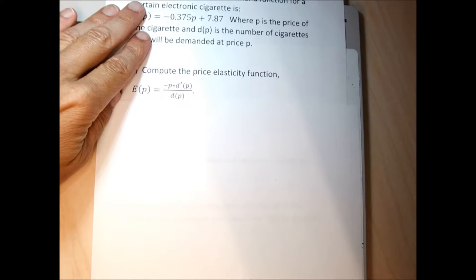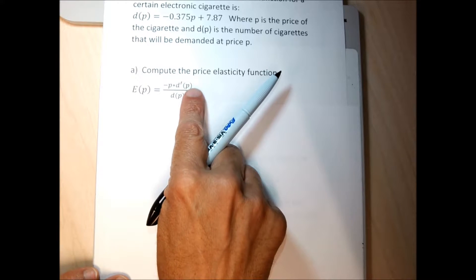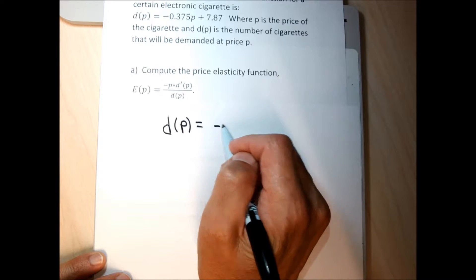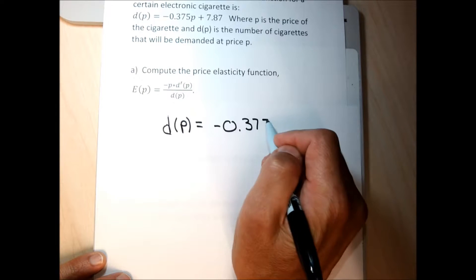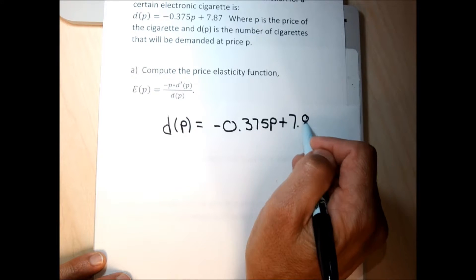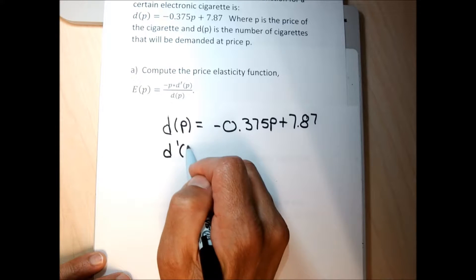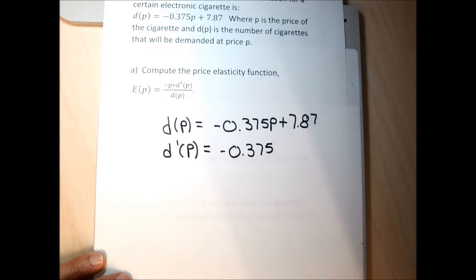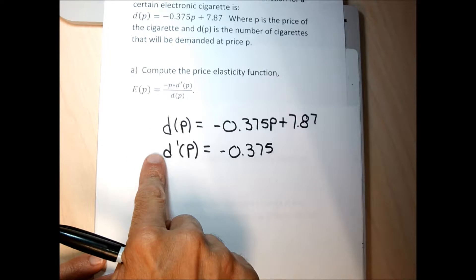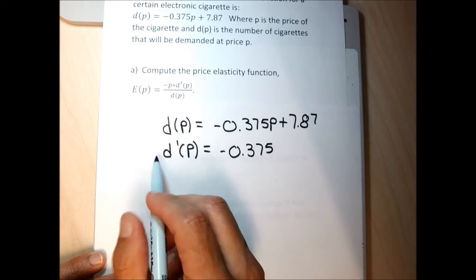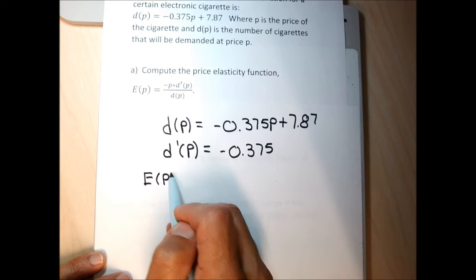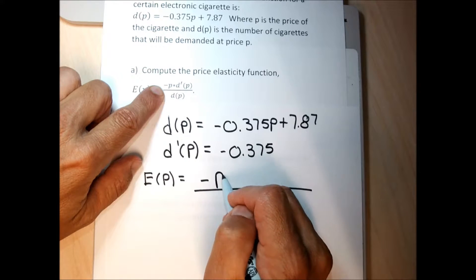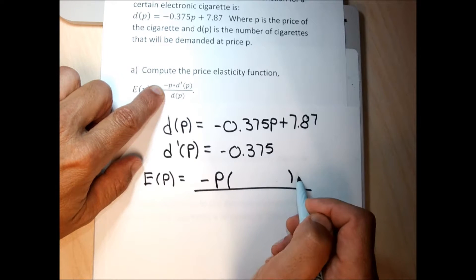Part A says compute the price elasticity function. In order to do that, I need the derivative of the price demand function. The price demand function is negative 0.375P plus 7.87. Using the general power rule, the derivative of the first piece is just negative 0.375 and the derivative of 7.87 is 0. Now I have both the price demand function and its derivative, so I can find the price elasticity function. I form a fraction: the numerator starts with negative P, then I multiply by the derivative.